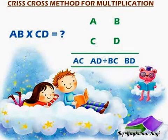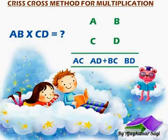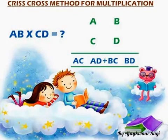Now this is the answer for AB into CD: AC, AD plus BC, and BD.